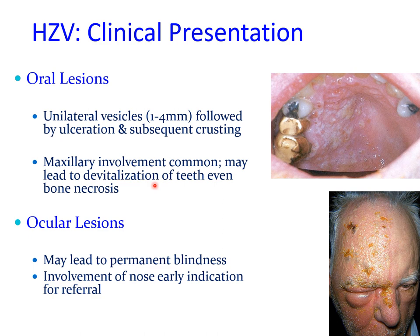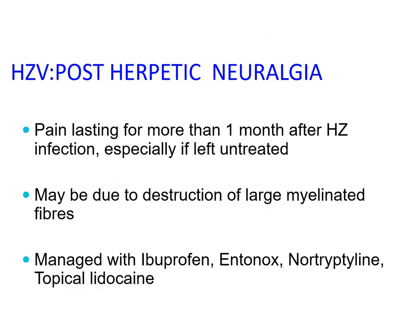Maxillary involvement is most common and may lead to devitalization of teeth and possibly even bone necrosis. Ocular lesions are a major concern because involvement of the eyeball may lead to permanent blindness. Involvement of the nose is an early indication for referral, as periorbital lesions can involve the eyeball, and you must refer patients to appropriate medical colleagues for further management.